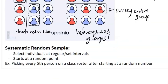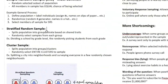The next sampling technique is systematic random sample, where you select individuals at regular or set intervals starting at a random point. For example, if I was sitting outside my school and gave a survey to every fifth person that walked in, that's a systematic random sample.